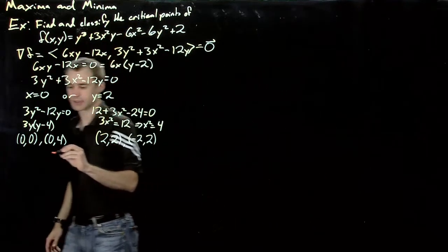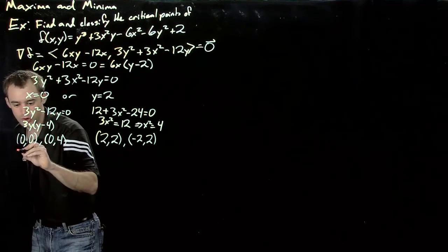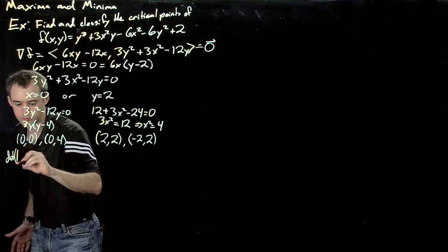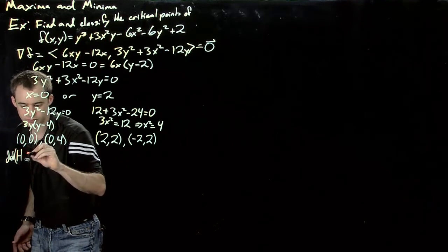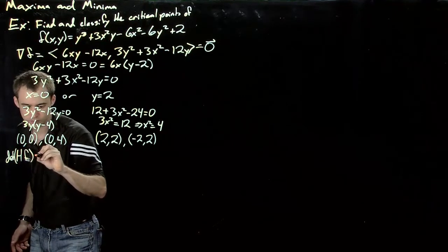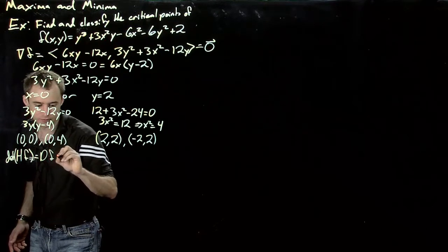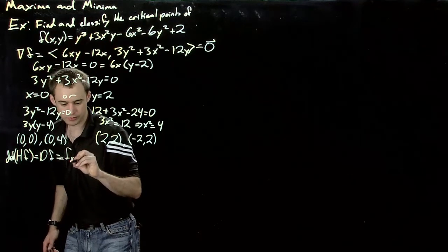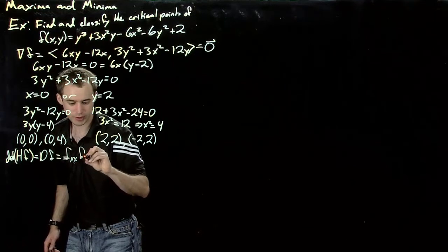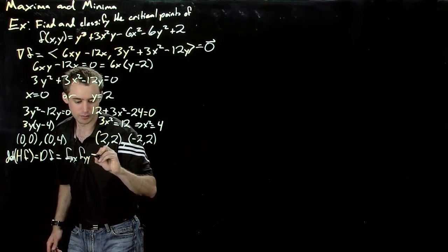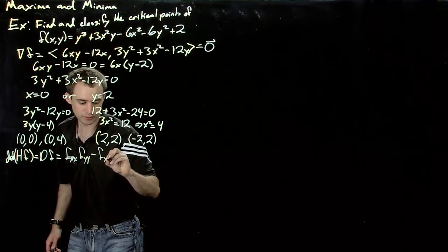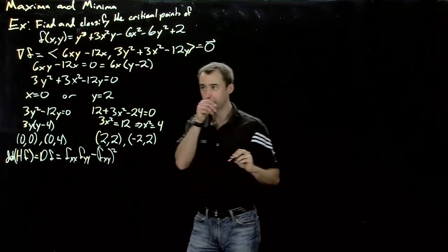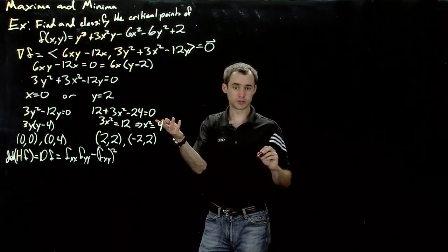So let's compute what the Hessian is. Recall the determinant of the Hessian, or this df, is fxx times fyy minus fxy squared.